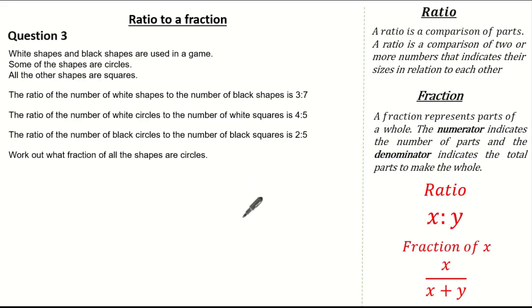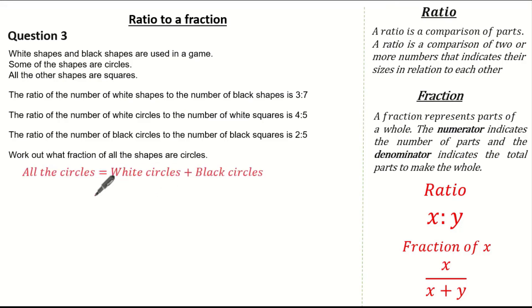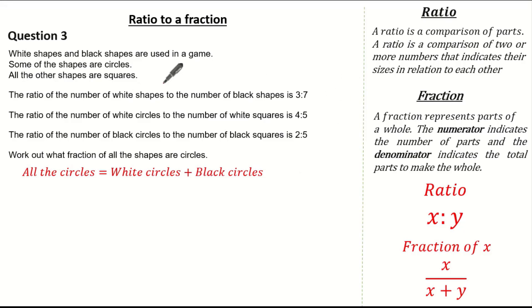The question wants us to work out what fraction of all the shapes are circles — so we're interested in white circles and black circles. A good exam tip is to do one sentence at a time. The ratio of white to black shapes is three to seven, so three tenths of the shapes must be white.